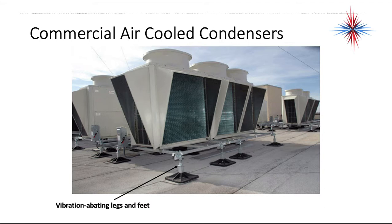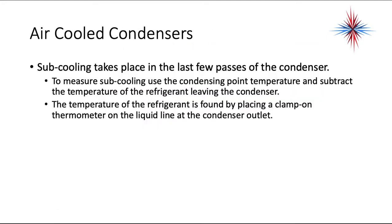These are commercial air-cooled condensers found on rooftops, usually mounted with vibration-abating legs and feet because the motors are large. Subcooling takes place in the very last few passes of a condenser. To measure subcooling, use the condensing point temperature and subtract the temperature of the refrigerant leaving the condenser — convert your high side pressure to temperature, then subtract the liquid line temperature measured at the condenser outlet with a clamp-on thermometer.